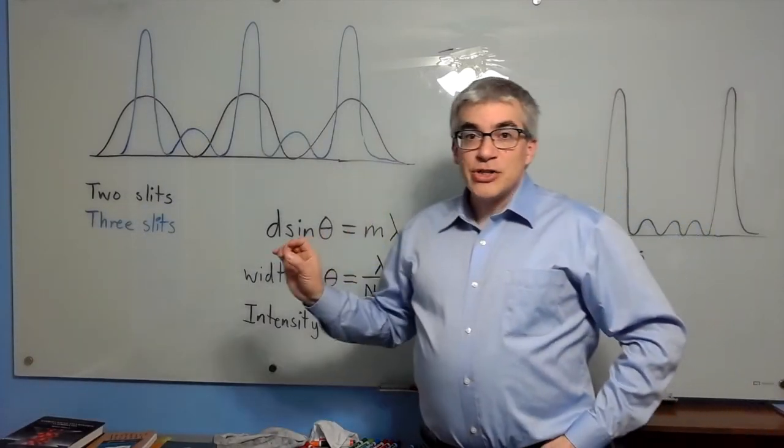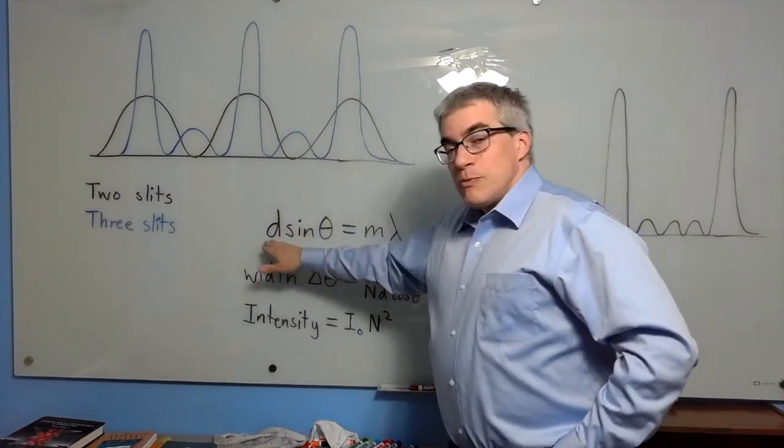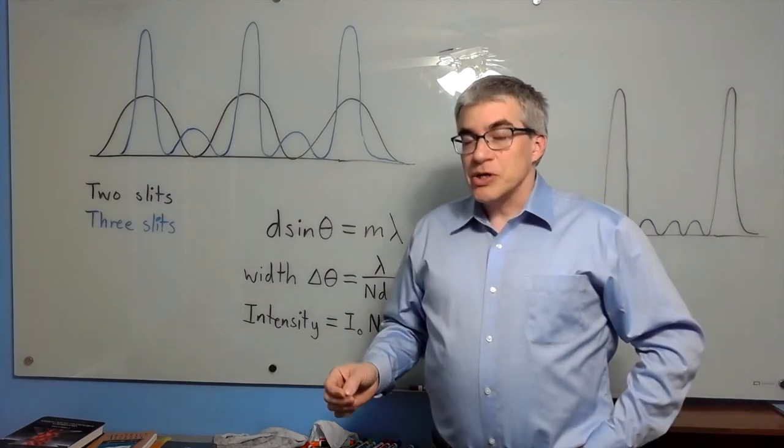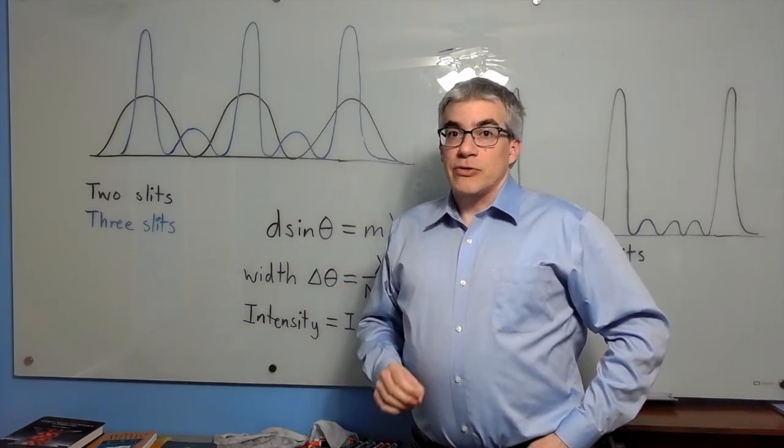But since the locations of the primary maxima do not change, the same formula, d sine theta equals m lambda for constructive interference, works for double-slits and for diffraction gratings.